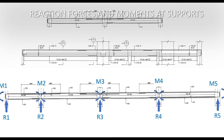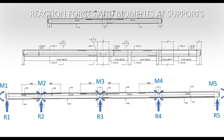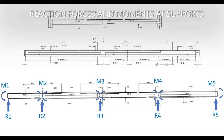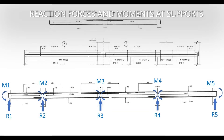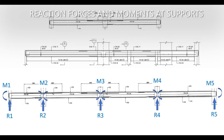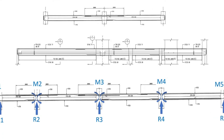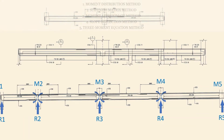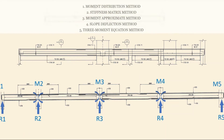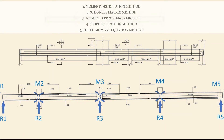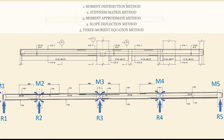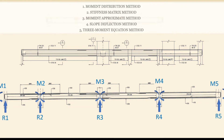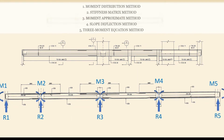Perhaps the fastest way to find reaction forces and moments is by using design software like ETABS or STAAD Pro, where we can input the section and material properties and the loadings, and then the software will calculate the values. However, without design software, we can also solve by using various methods like the moment distribution method, stiffness matrix method, moment approximation method, slope deflection method, or the three moment equation method. For this video, I'm going to use the three moment equation method to calculate the moments at internal supports and at the fixed end support.